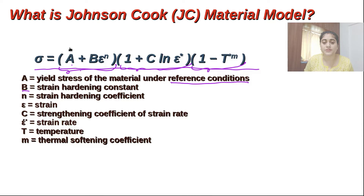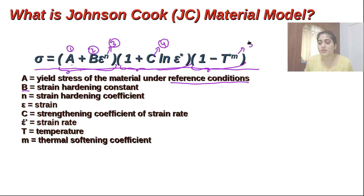Basically there are five parameters: A, B, N, C, and M — the thermal softening coefficient. These five parameters are applied for the FE simulation.